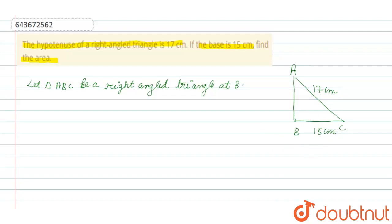Now in triangle ABC, by using Pythagorean theorem, hypotenuse square equals perpendicular square plus base square. So hypotenuse is AC, so we can write AC² = AB² + BC². So AC is 17, so we write 17² = AB² + BC is 15, so we write 15².